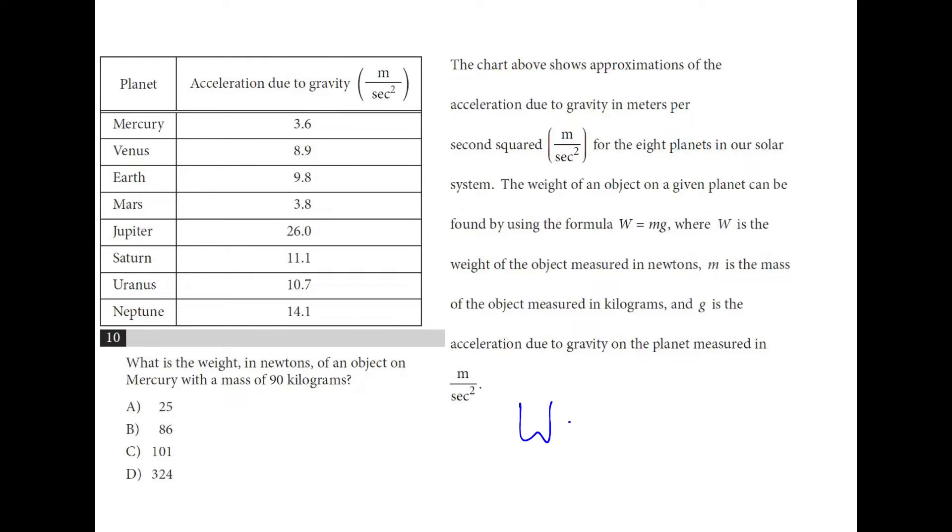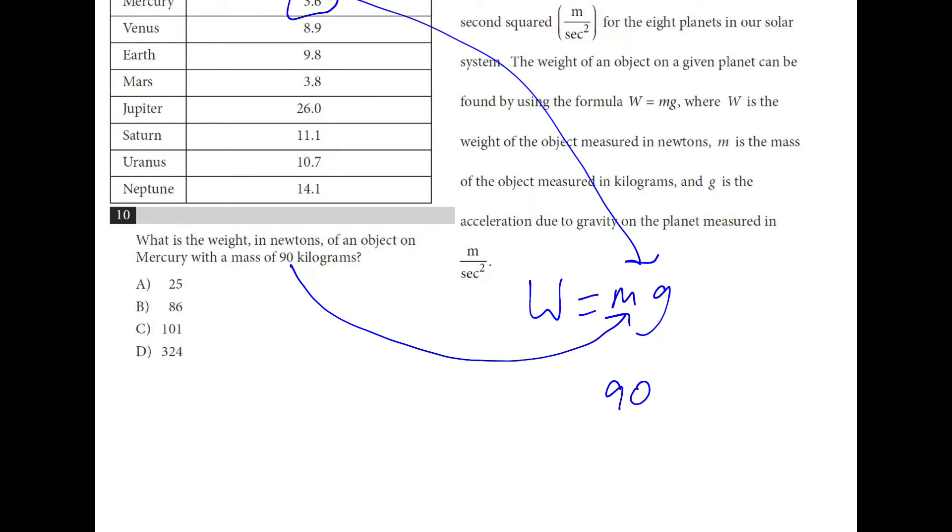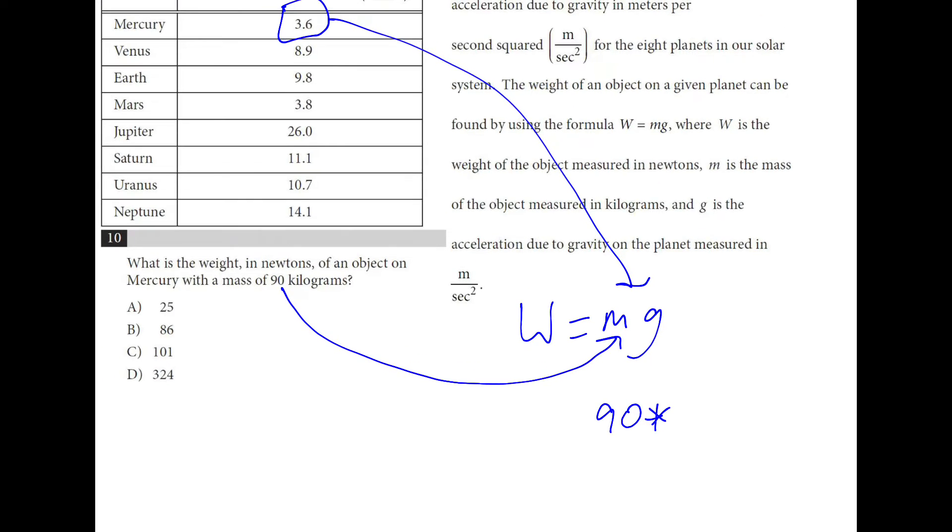If w equals mg, where g comes from this table, so for Mercury it's 3.6, and the mass comes here, we multiply those two: 90 times 3.6. So it's going to be above 270. There's our answer, D.